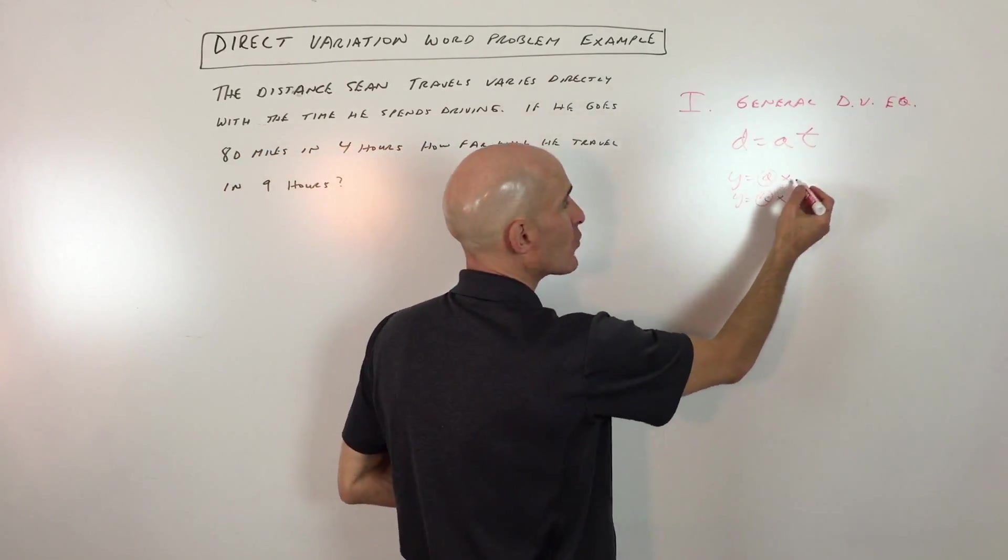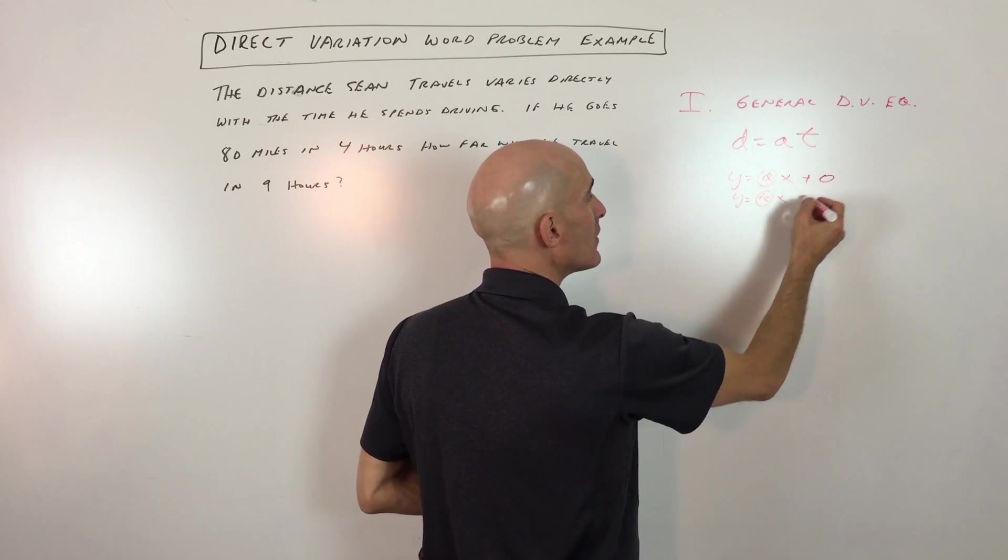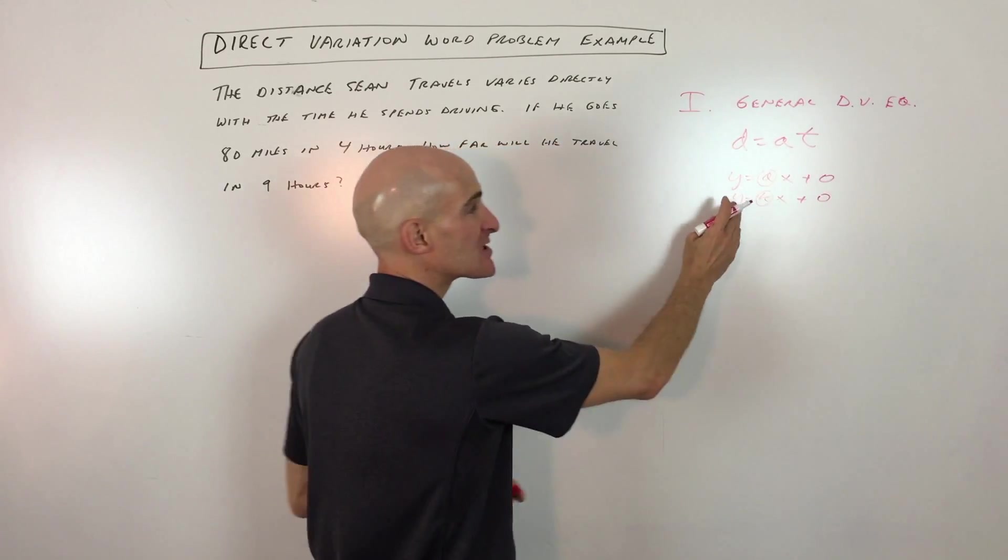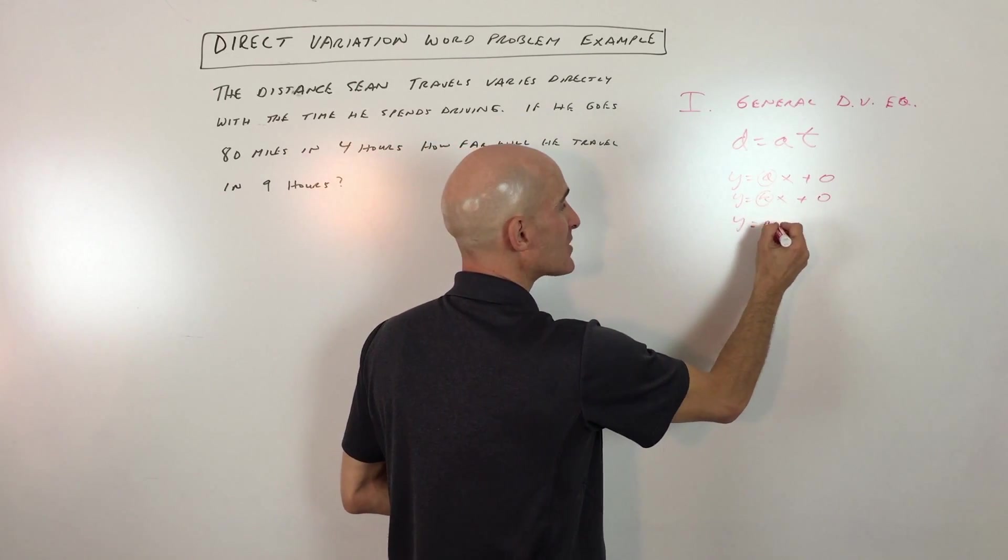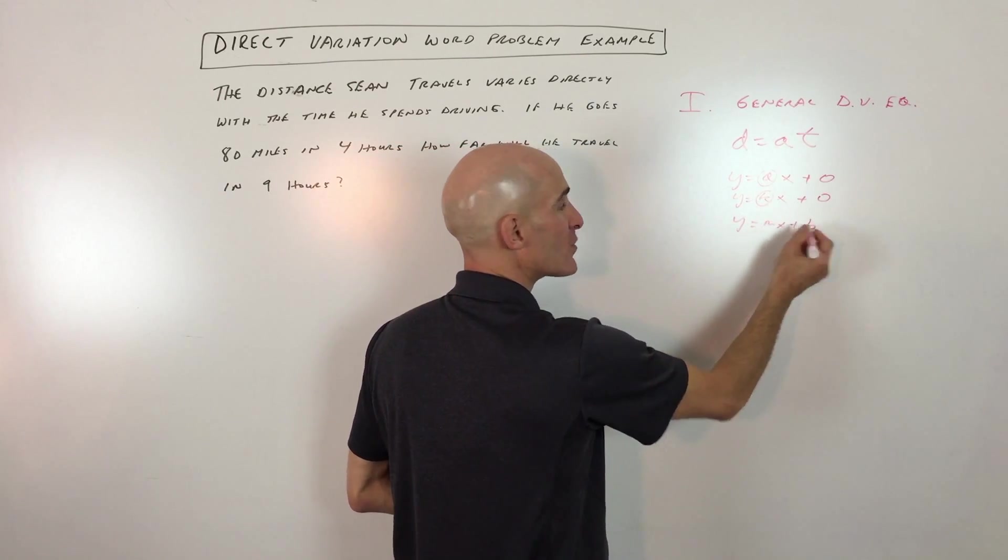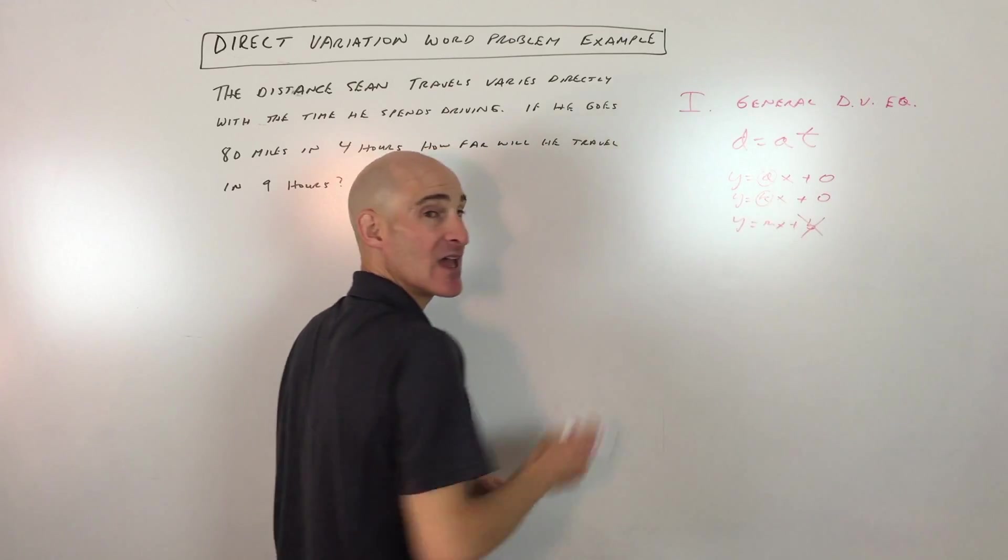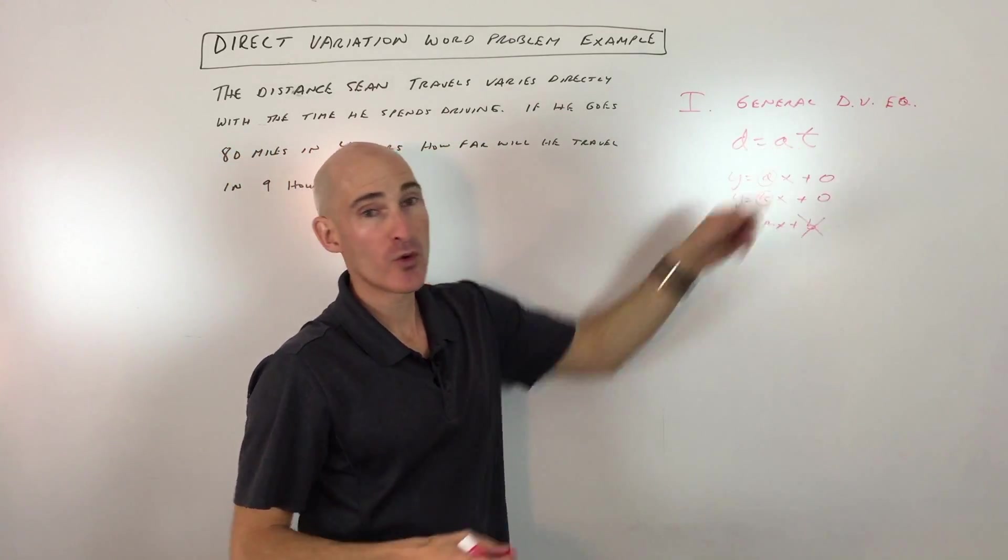Notice when you do direct variation equations there's no b value. The y-intercept is zero. It's very similar to y equals mx plus b, the slope intercept form of the line, but the b value is zero. So the first step is to write our general equation.